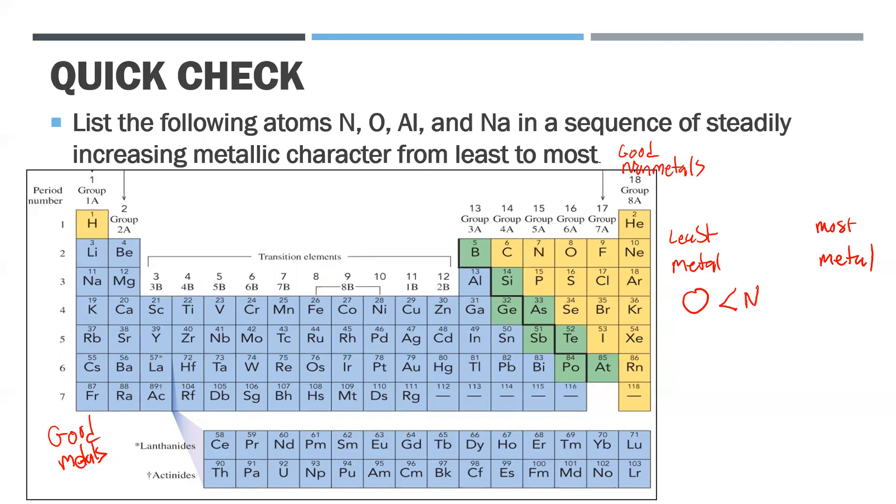Next would be nitrogen. Both of these are non-metals. The reason why oxygen is less metallic is because it's more of a non-metal - it's a smaller atom.